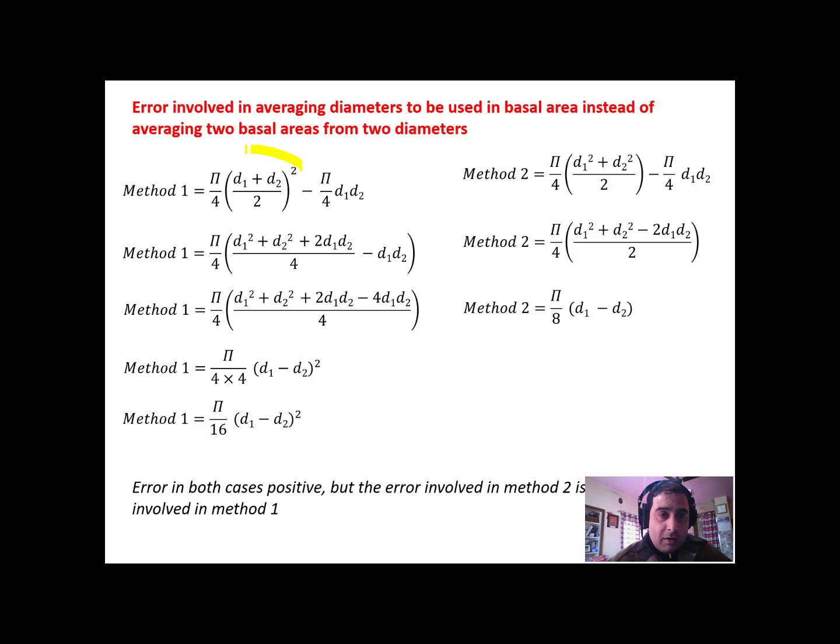This is the formula for estimating basal area using the first method, where we average the two diameters first, then get the basal area. And the second method, where we get the two basal areas using two diameters, then average the two basal areas. We are subtracting both these terms by a formula which is close to the actual basal area of the tree in both cases.